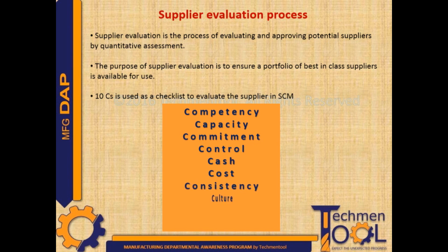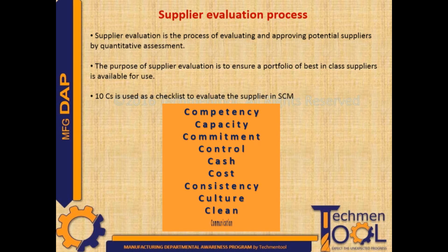Consistency: assurance from the supplier that it consistently provides high-quality goods or services. Culture: the supplier should have good business culture. Clean: this refers to the supplier's commitment to sustainability and its adherence to environmental laws and policies.